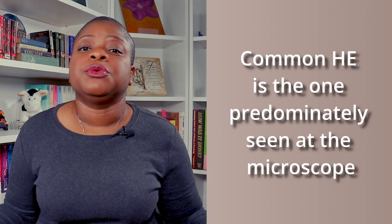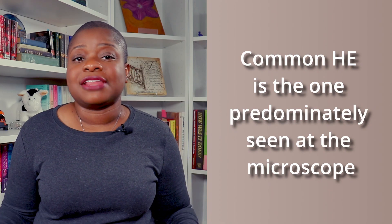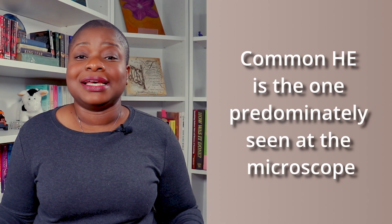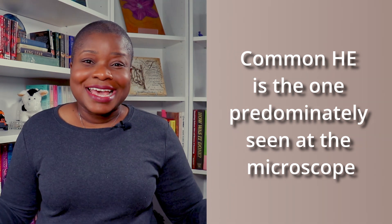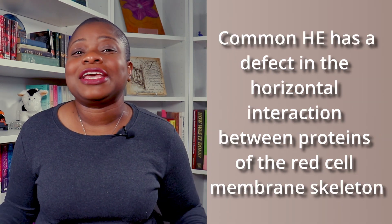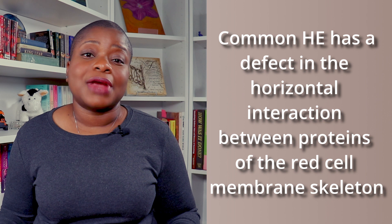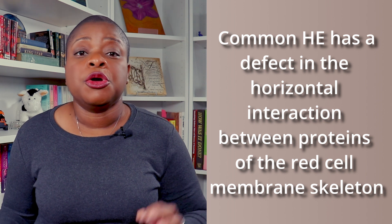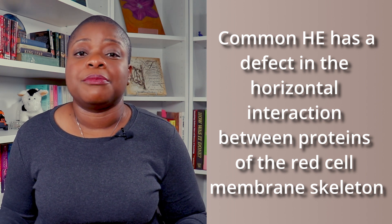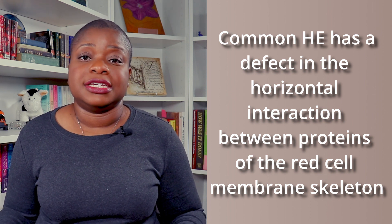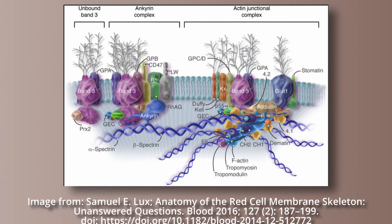Common HE is the one you will predominantly see at the microscope because it is common. It has a molecular defect involving the horizontal interaction between proteins of the red cell membrane skeleton, usually involving impaired spectrin dimer self-association or protein 4.1 deficiency.